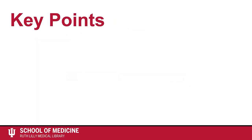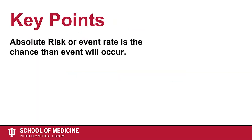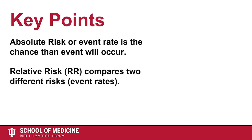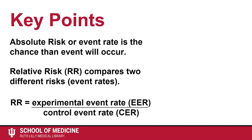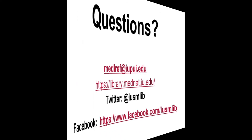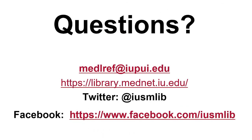Remember: absolute risk or event rate is the chance that an event will occur. Relative risk compares two different risks, or event rates. The formula for relative risk is experimental event rate divided by control event rate. Thank you for watching this short video on relative risk. Questions? Feel free to contact us at the Ruth Lilly Medical Library. Be sure to check out our other videos and tutorials available through the library website.